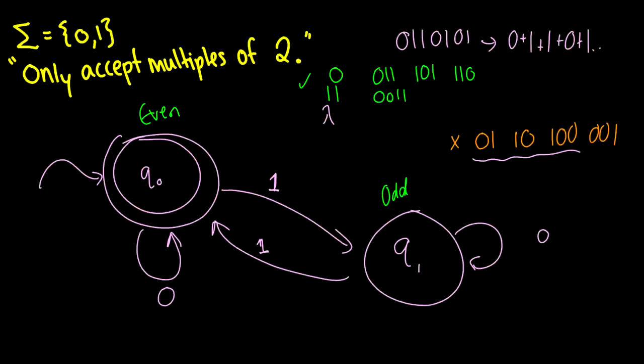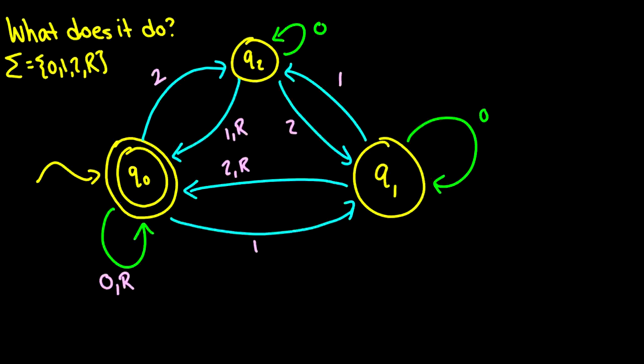All right, now that we know how to draw them, what about if I give you a state machine and say, what does it do? In fact, I've been a little vague here. I've said, well, sigma is 0, 1, 2, and the letter R. What does R stand for? Well, you got to figure that out. So take a moment, look at this machine, and tell me what you think it does. All right, hopefully you've had a look at this.